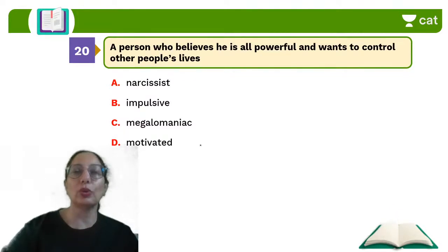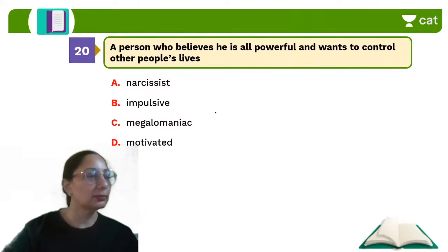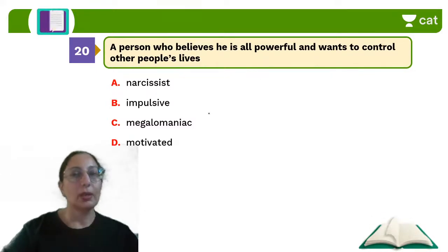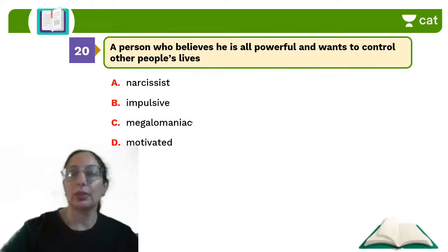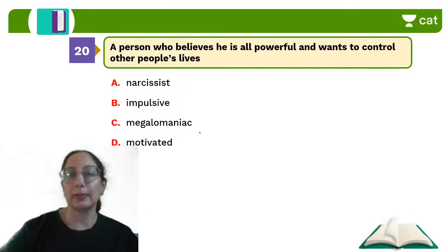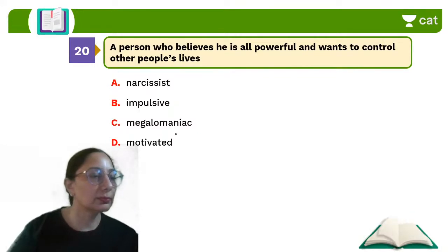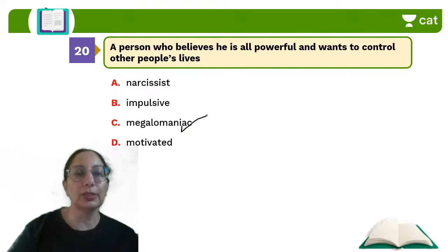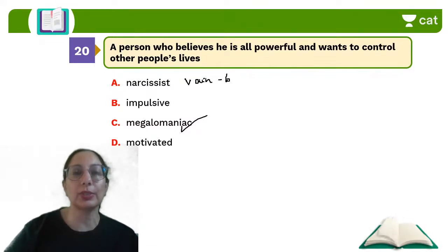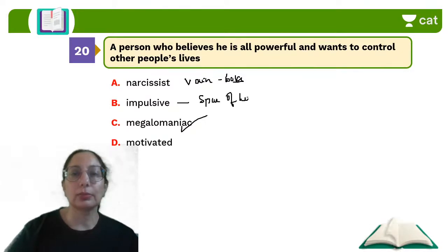Question 20: A person who believes he is all-powerful and wants to control other people's lives. Narcissist is a person who is very vain about his looks, in love with his looks. Impulsive is doing things on the spur of the moment without thinking. Motivated is a person who is inspired.